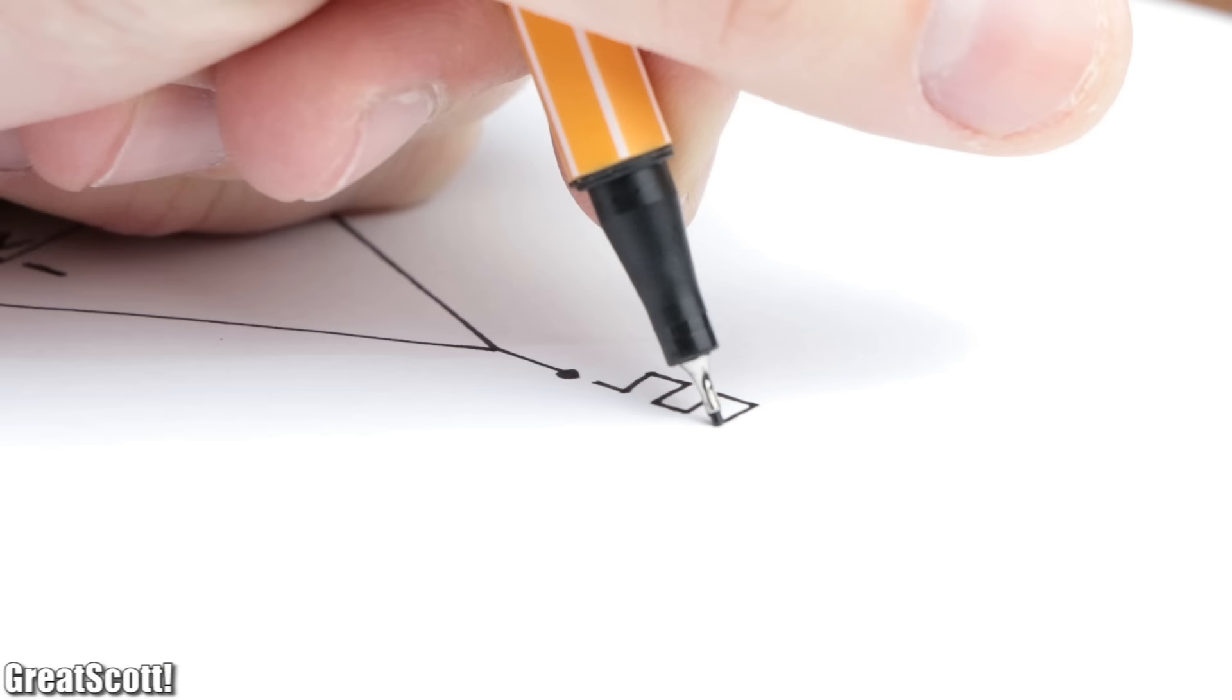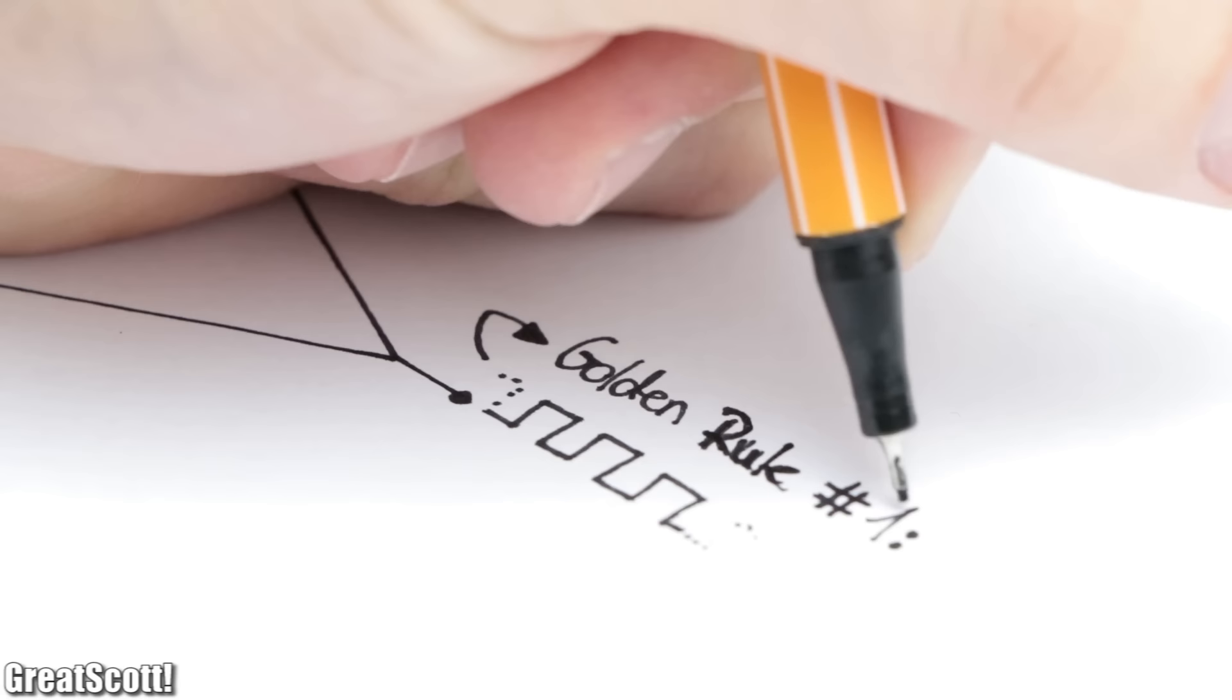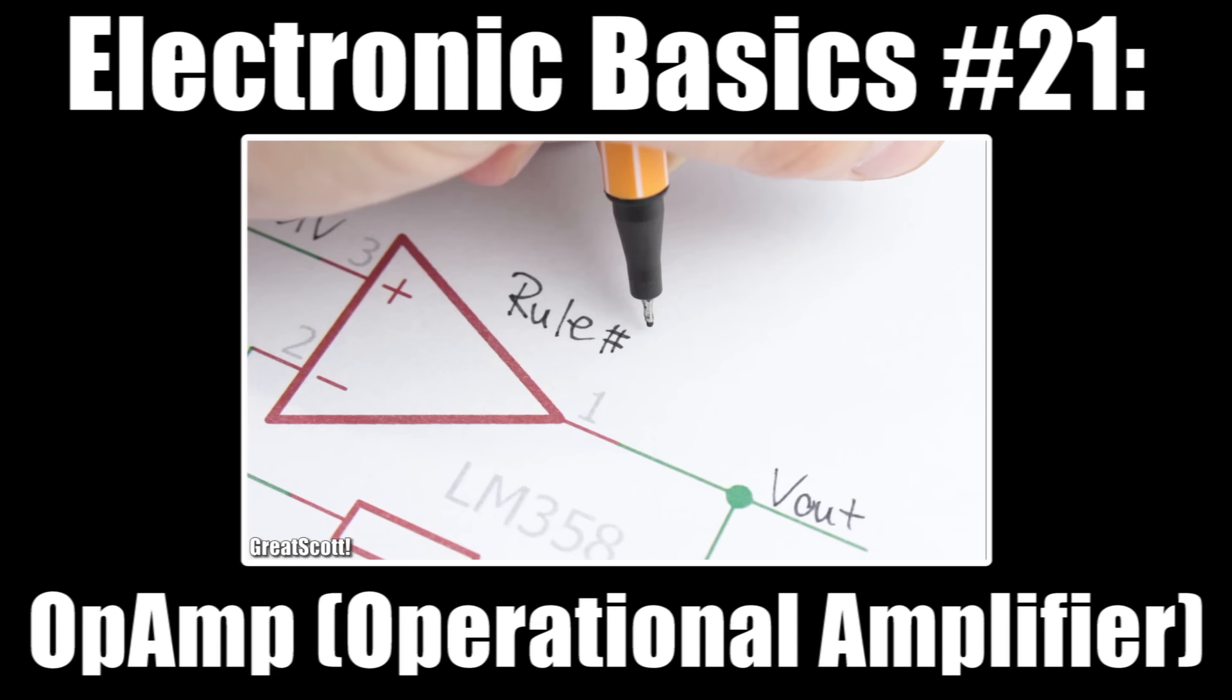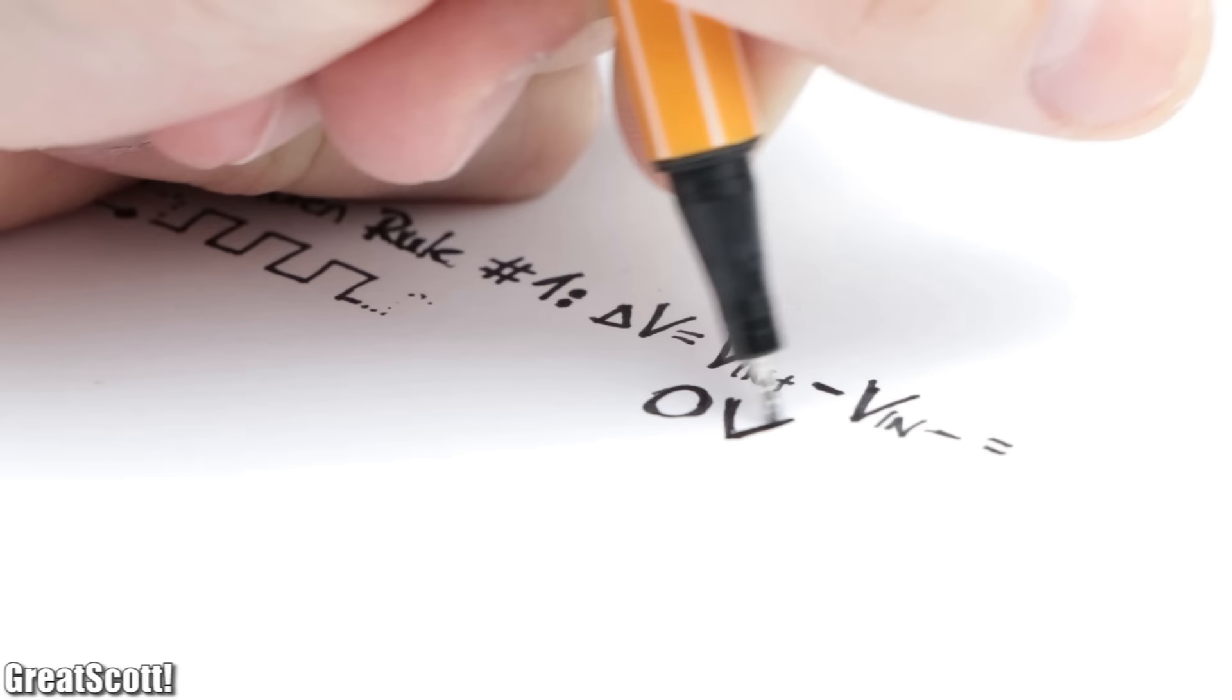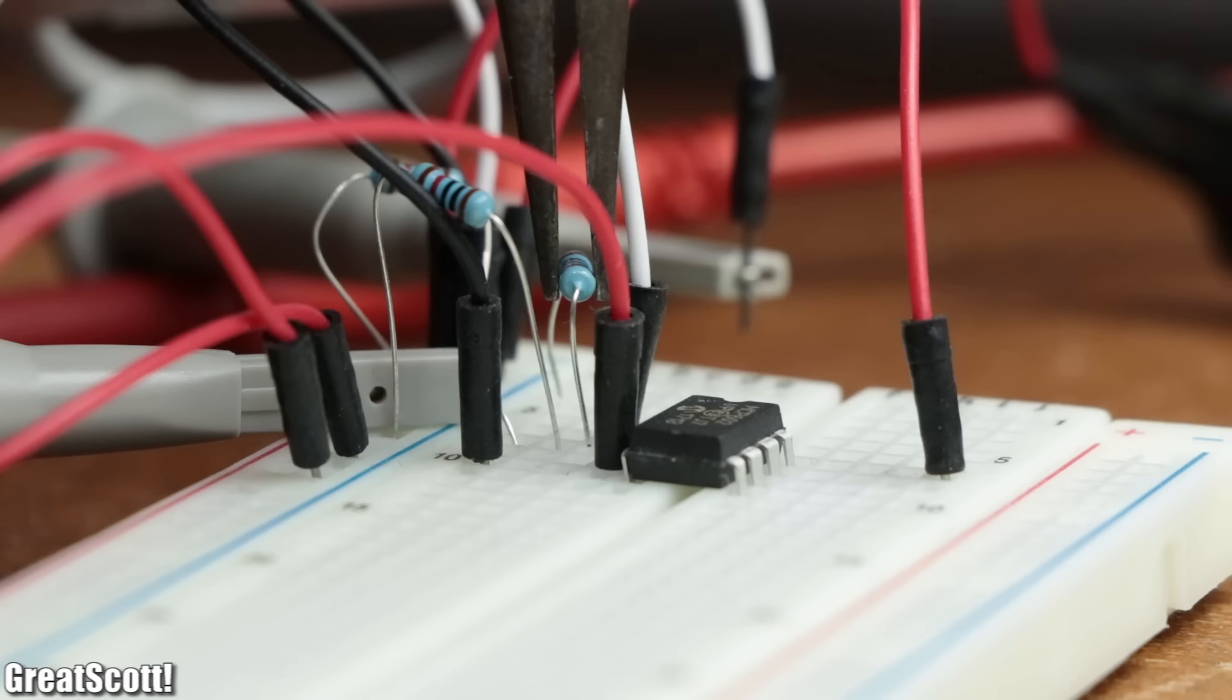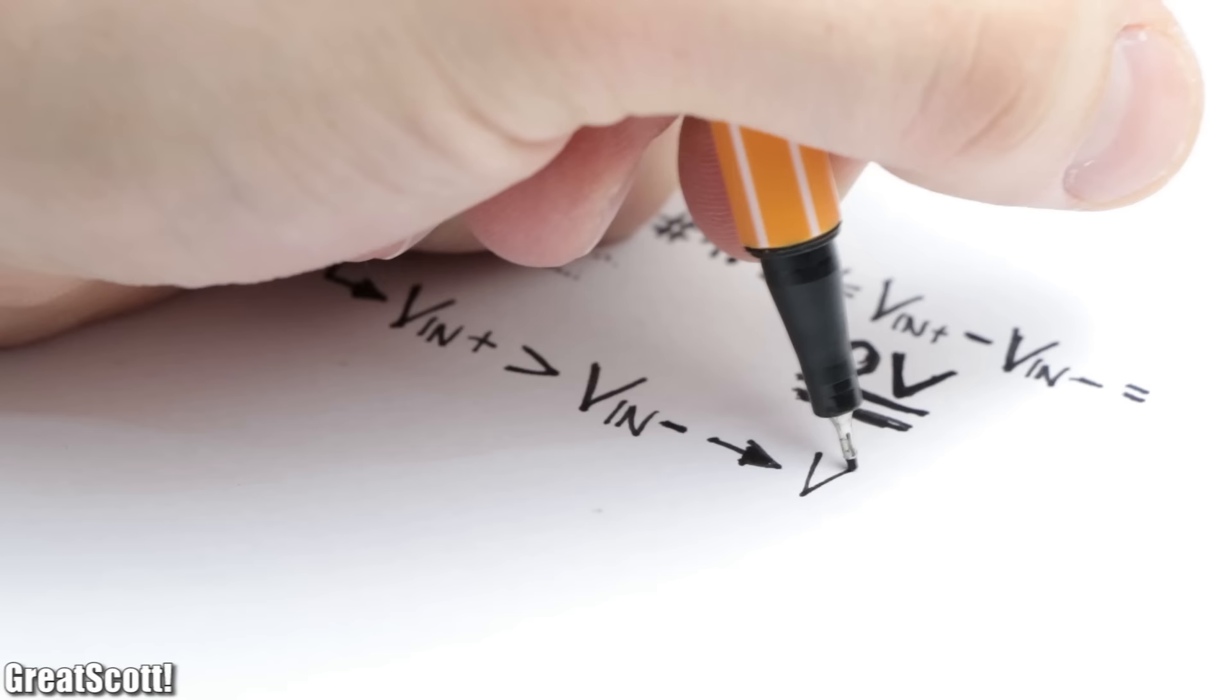The reason for this behavior can be explained by the first golden rule of op-amps, which you should be familiar with if you watched my basics video about the subject. But anyway, the rule states that an op-amp will do anything to achieve a zero volt difference between its inputs. But since our op-amp configuration has no feedback system, the output either swings up to the positive supply voltage if the non-inverting input has a higher voltage potential than the inverting input,